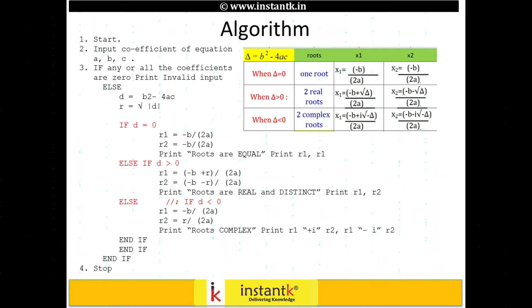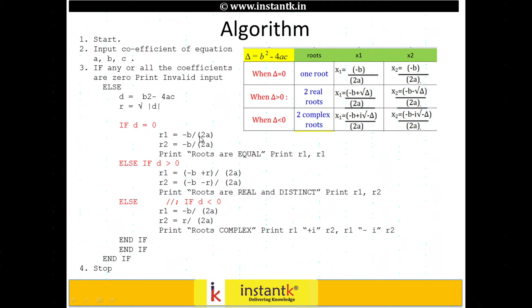One is if D is equal to zero, then as explained, we are going to have one root which is minus B by 2A. Both roots R1 and R2 are equal, and we print the values of R1 and R2.